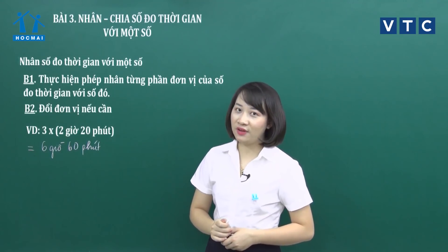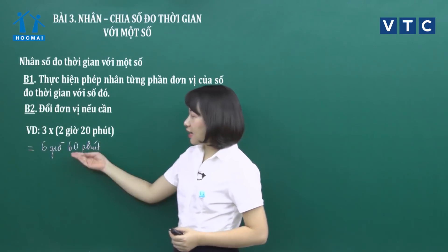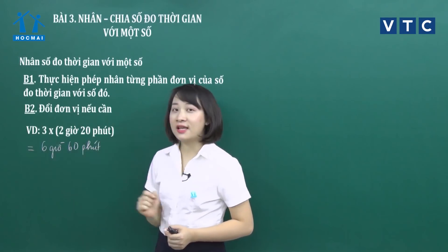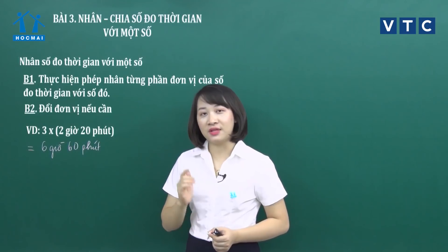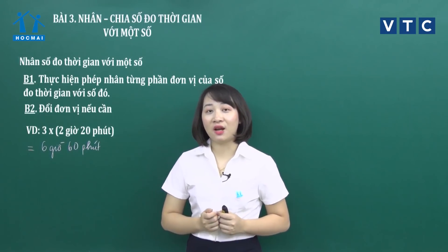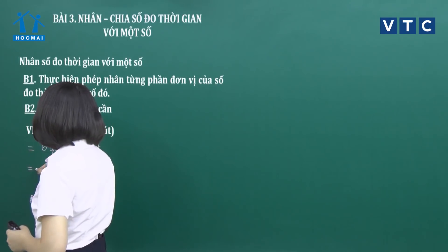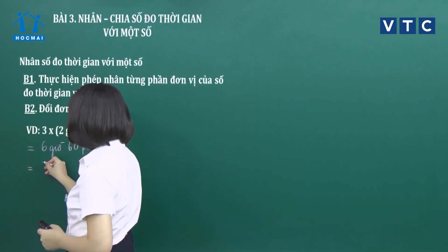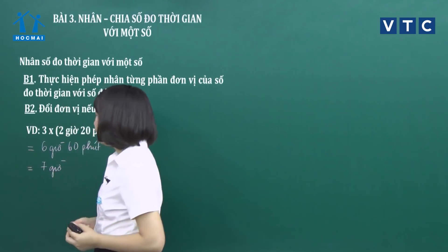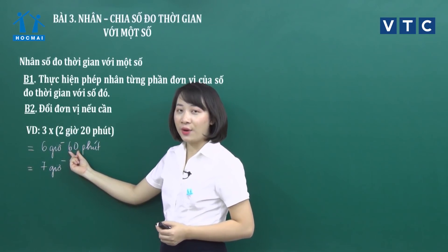Khi nào thì chúng ta sẽ đổi đơn vị và khi nào không? Các bạn để ý rằng 60 phút này có thể đổi sang phần giờ, bởi vì 60 phút bằng 1 giờ. Như vậy với bước này chúng ta cần đổi đơn vị: bằng 6 cộng 1 bằng 7 giờ. Còn với những phép toán mà chúng ta ra phần này nhỏ hơn 60 thì không cần đổi.